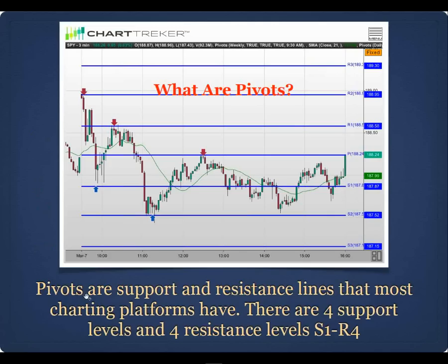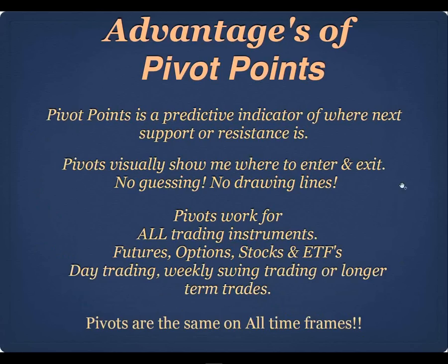On this three-minute SPY chart for one day, price opened up, gapped up to the daily R2 pivot, fell down to the daily S1 pivot, spiked back to R1, fell to S2 at 11 a.m., rallied to the daily pivot at 12:30 p.m., did a double bottom test on the daily S2 pivot, and closed at the daily pivot. The computer algorithms are buying and selling at these different pivot levels — knowing this makes day trading much easier.